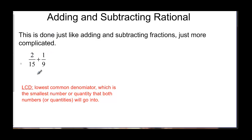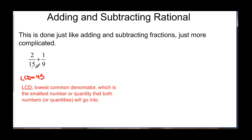Let's think about this problem. How would we add this? If you remember, we need a lowest common denominator — that's the smallest number or quantity that goes into both numbers or quantities when we're talking about rationals. So we look at 15 and 9, and they have 45 in common. So the least common denominator is going to be 45, and then you multiply to make both of those denominators 45.